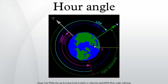Negative hour angles indicate the time until the next transit across the meridian. An hour angle of zero means the object is on the meridian.